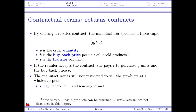For the return contract, it is again a three-tuple (Q, B, T): Q is the order quantity, B is a buyback price paid to the retailer for every unit of unsold product (assuming full return), and T is the transfer payment. If the retailer accepts, she pays T dollars to get Q units, and afterwards there is a buyback price B per unsold unit. T can be any function depending on Q and B — this is the most general return contract.